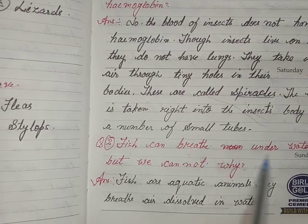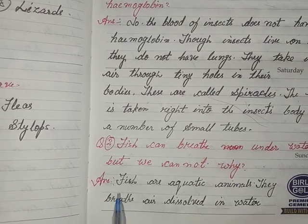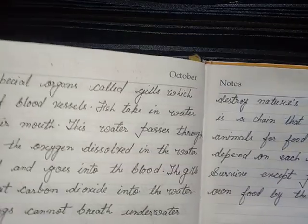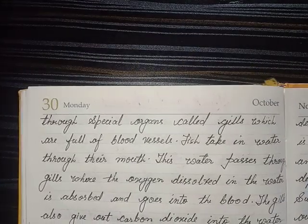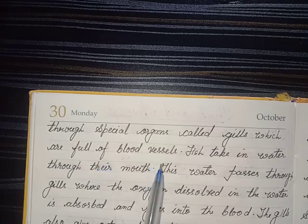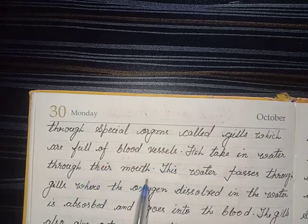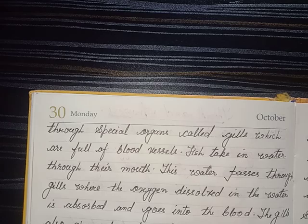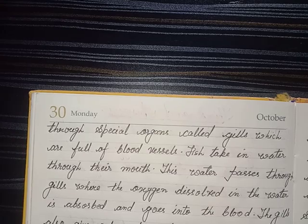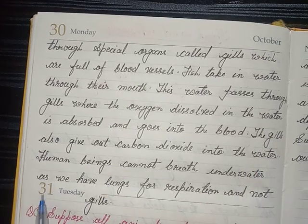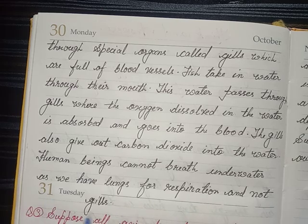Question 2 — Fish can breathe under water but we cannot. Why? Answer: Fish are aquatic animals. They breathe air dissolved in water through special organs called gills, which are full of blood vessels. Fish take in water through their mouth; this water passes through the gills where the dissolved oxygen is absorbed into the blood. The gills also give out carbon dioxide into the water. Human beings cannot breathe underwater as we have lungs for respiration and not gills.